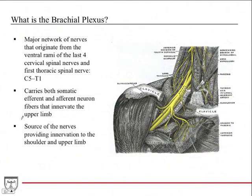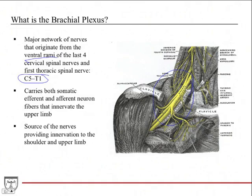So starting off, what is the brachial plexus? The brachial plexus is a major network of nerves located in the shoulder pectoral region, just deep to the clavicle and some of the muscles in the shoulder area. It originates from the ventral rami of the last four cervical spinal nerves. The dorsal rami go innervate the back muscles and skin; the ventral rami come off the cervical spinal nerves and form the brachial plexus, running from C5 to the first thoracic spinal nerve.